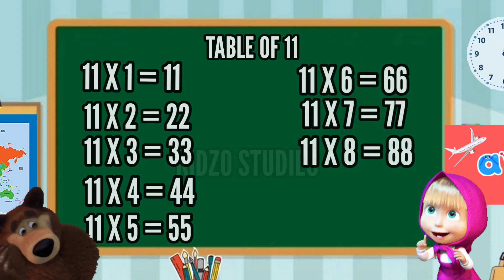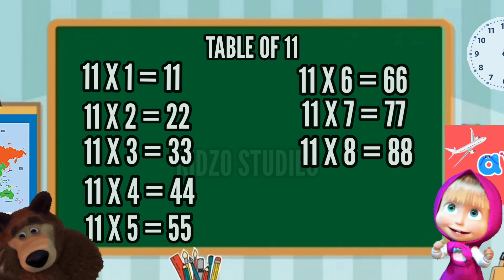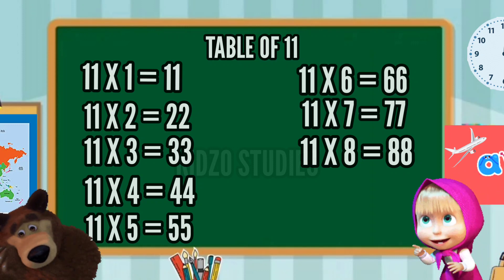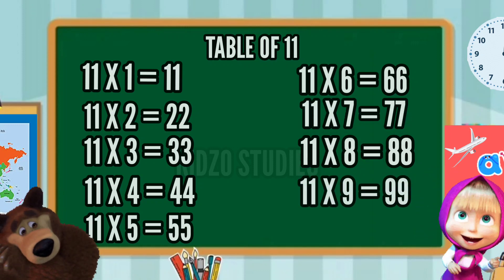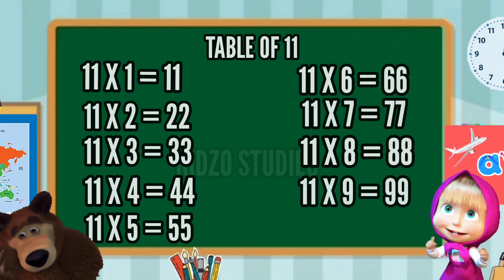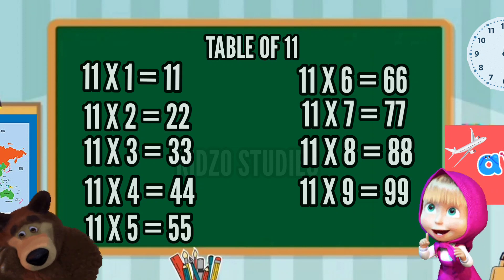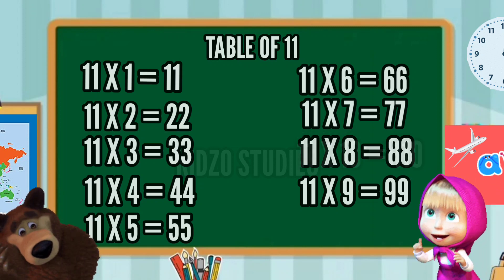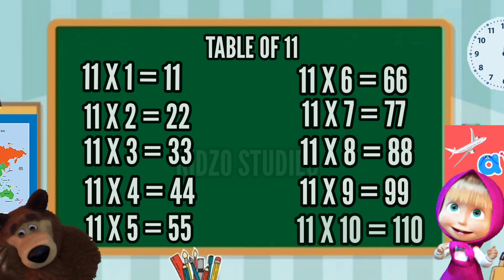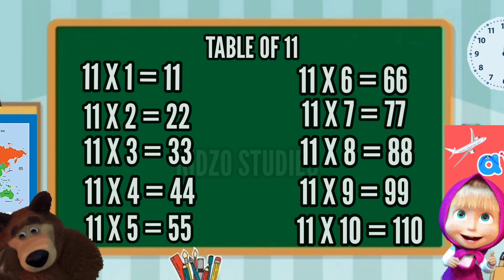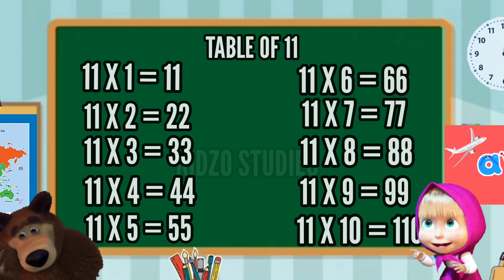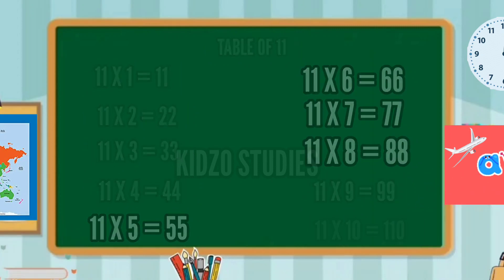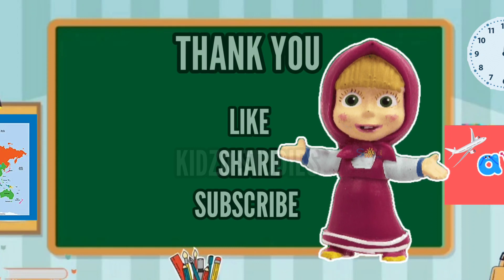Eleven eights are eighty-eight. Eleven nines are ninety-nine. Eleven tens are one hundred ten. Thank you for watching.